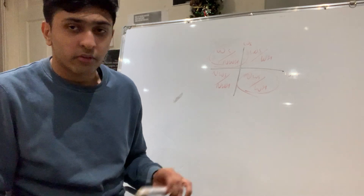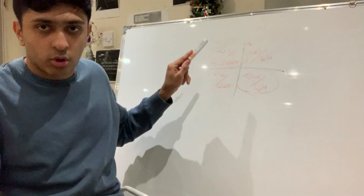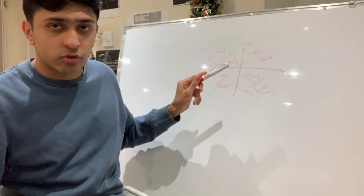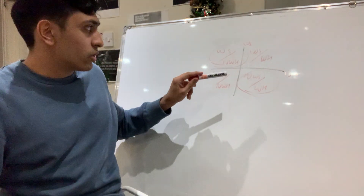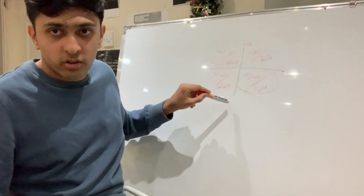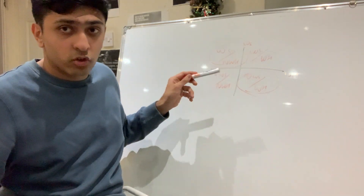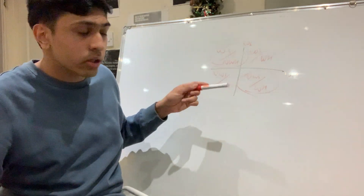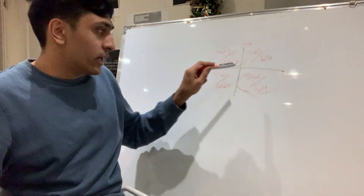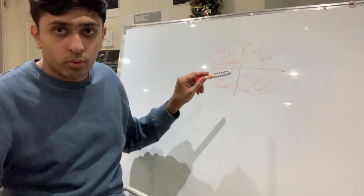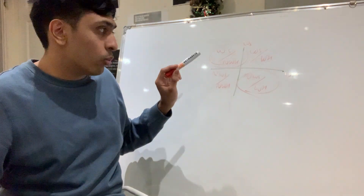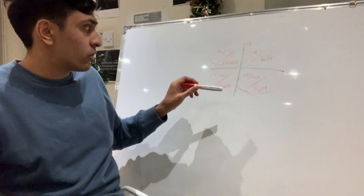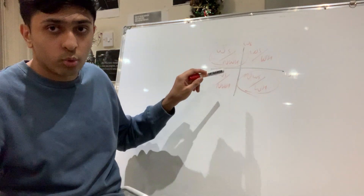I've summarized it in this quadrant. On the y-axis we've got working smart — the level of intelligence in work — and on the x-axis we've got working hard, which is effort. So we split it into four quadrants.